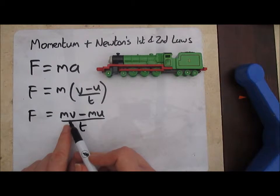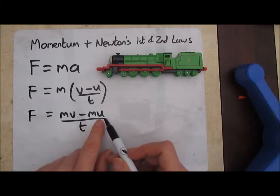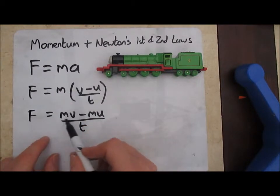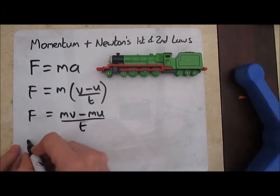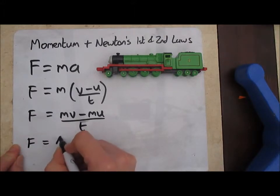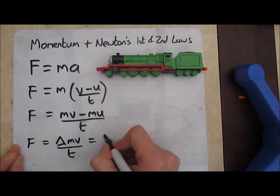And what we've got here is an expression where mv is the final momentum and mu is the initial momentum, so effectively we've got a factor in here that is change in momentum.